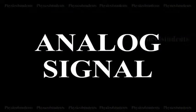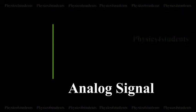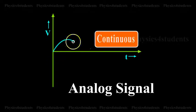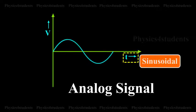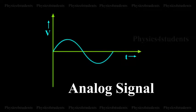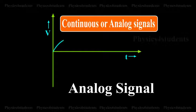Analog Signal. The signal current or voltage is in the form of continuous time-varying voltage or current, i.e. sinusoidal. Such signals are called continuous or analog signals.